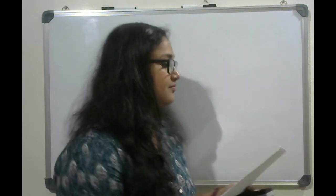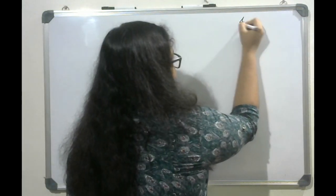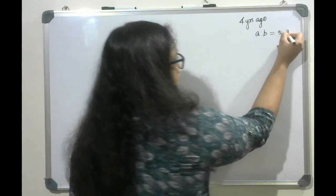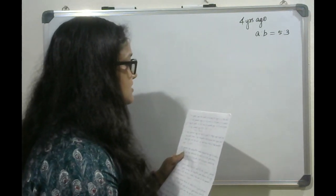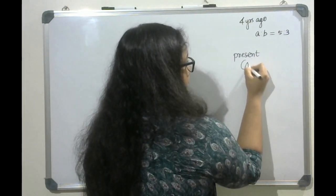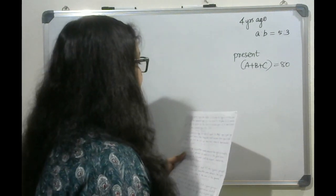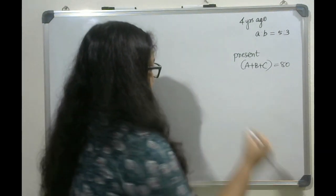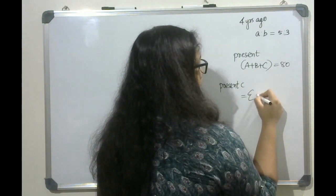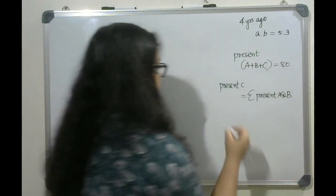Moving on to the first question. Four years ago, the ratio of A's and B's ages was 5 is to 3. The sum of the present ages of A, B and C is 80 years. If C's present age is equal to the sum of present ages of A and B, what is the present age of A?